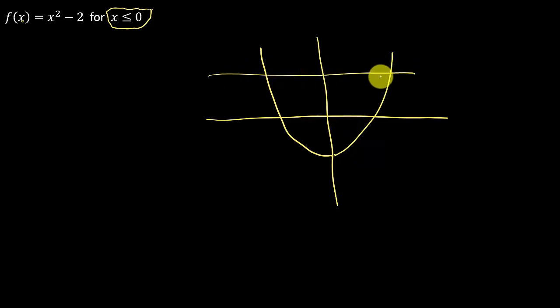So that means it's not 1 to 1. So that means this right here does not have an inverse. Okay, because it's not 1 to 1. However, we've got this condition on here.